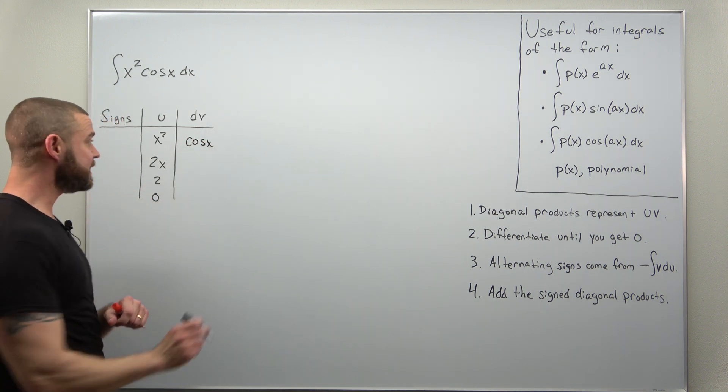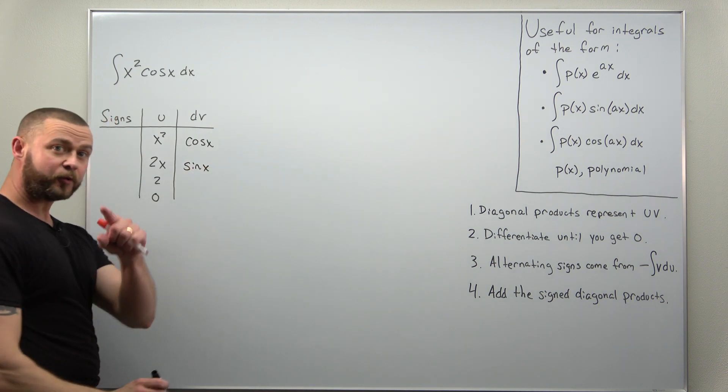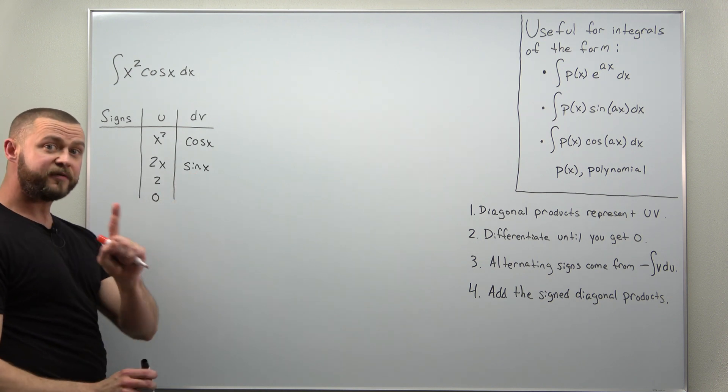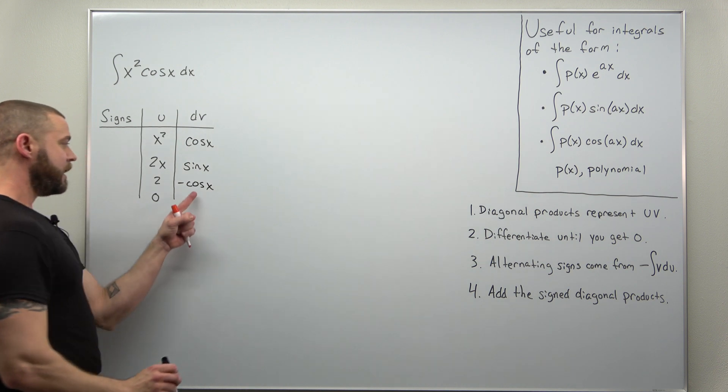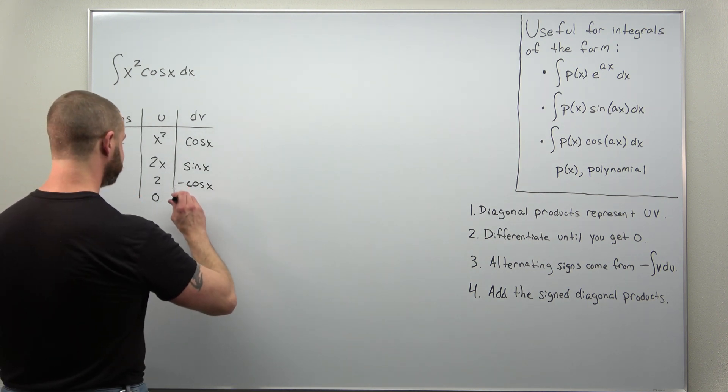We're going to repeatedly integrate that. Just be careful here. Your antiderivative for cosine will be sine. Your next antiderivative, that's going to be negative cosine of x. And when you integrate negative cosine of x, you'll get negative sine of x.